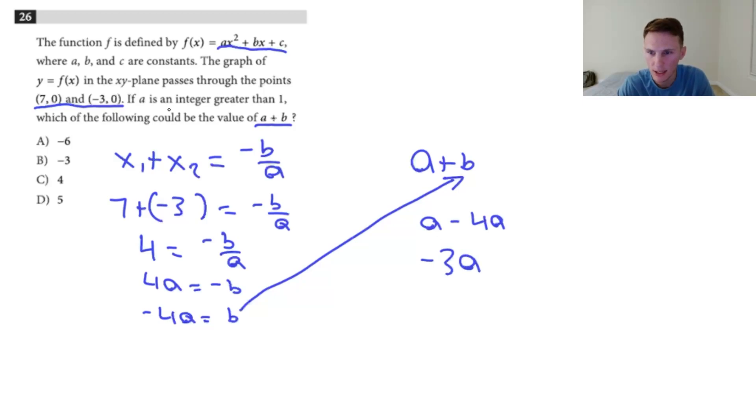This will become a minus 4a when we plug it in or negative 3a. And then the question is just asking if a is an integer greater than 1, which of the following could be. So what you should gather from this is that a plus b, which is what negative 3a ends up being, it has to be a multiple of negative 3. And I'll just demonstrate. So if we plug in a equals 2, because it has to be greater than 1, that'll be negative 3 times 2 which will equal negative 6 and then negative 3 and then you would just keep going.